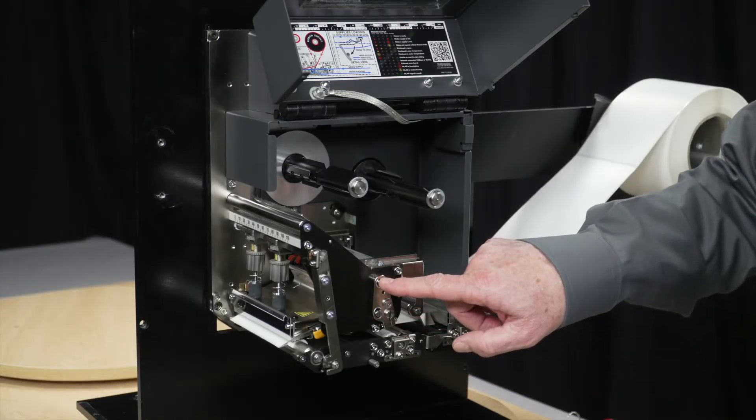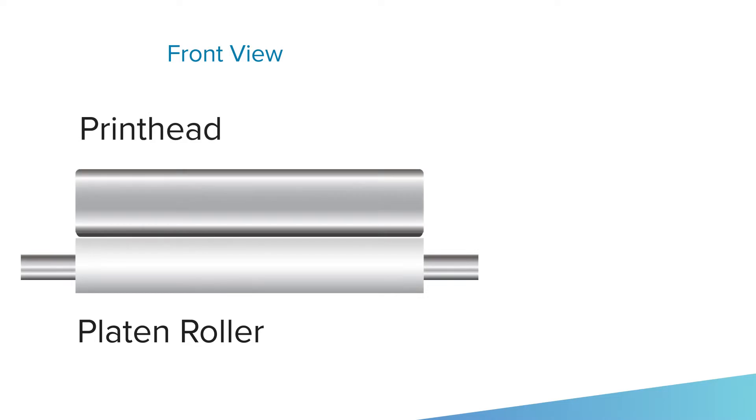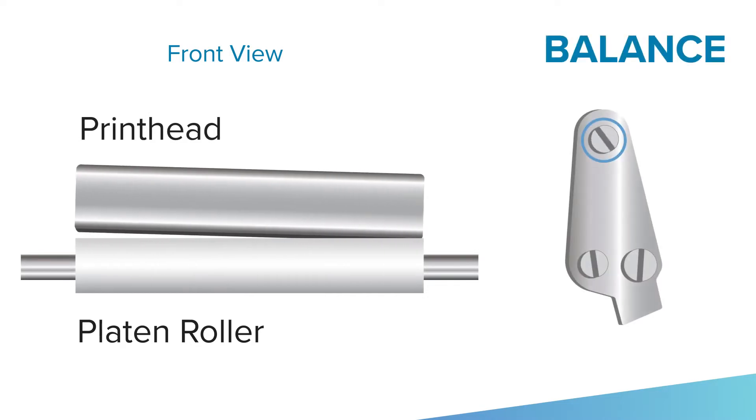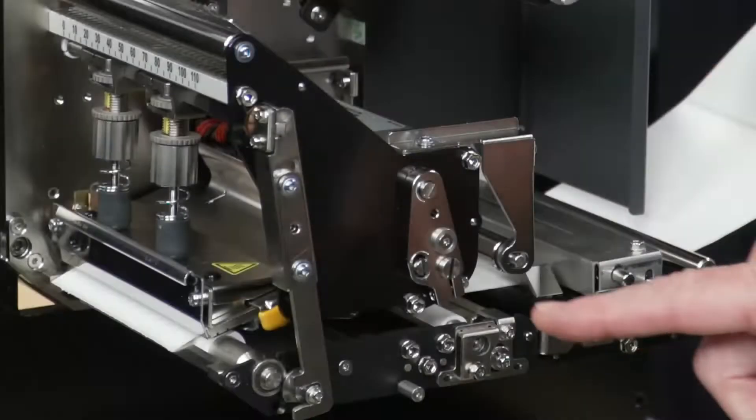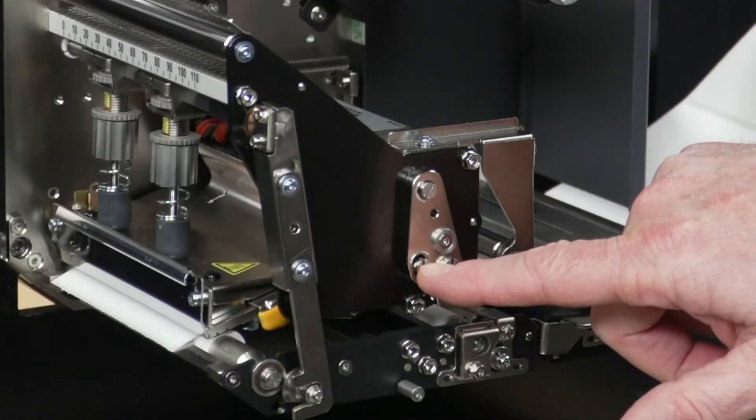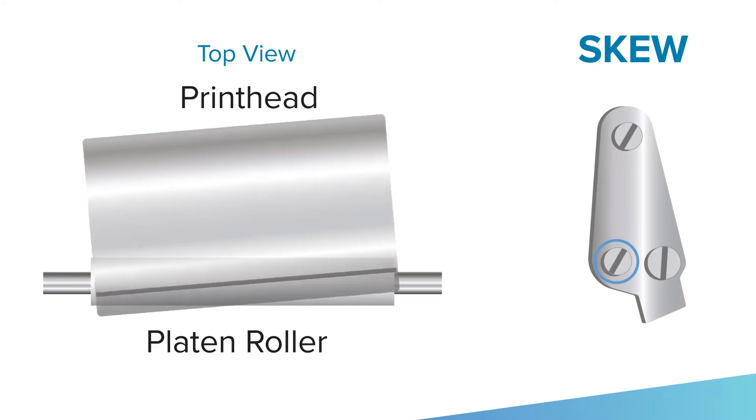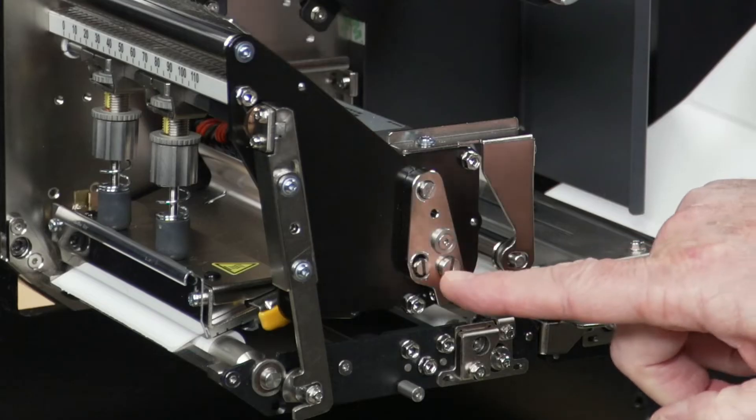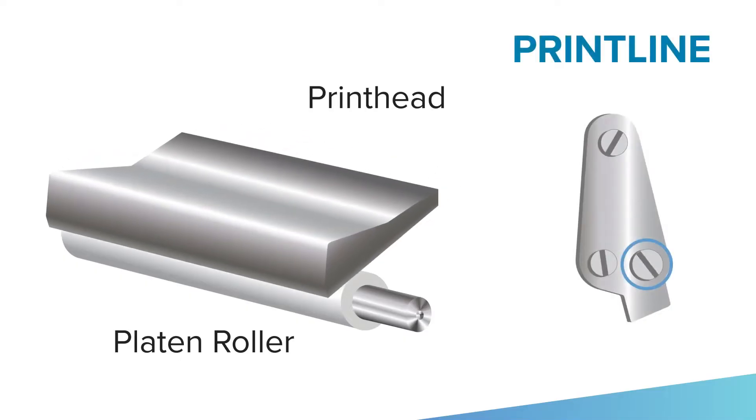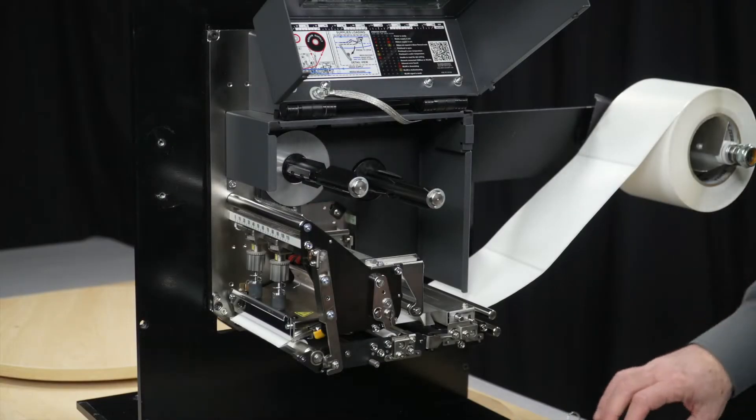So the balance screw adjusts, if this is my platen roller and this is my print head, it adjusts the balance of the print head to the platen roller. The skew adjustment, platen to print head, adjusts this methodology or movement of the head. And the fore aft adjustment is certainly just that. So we're going to take a look at those.